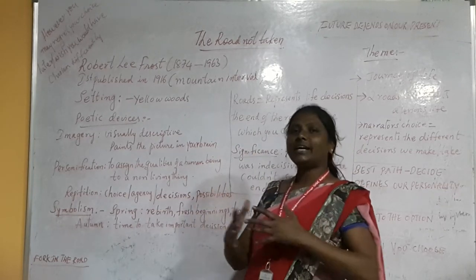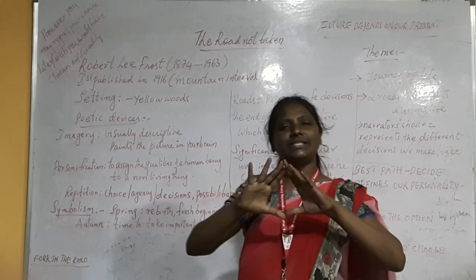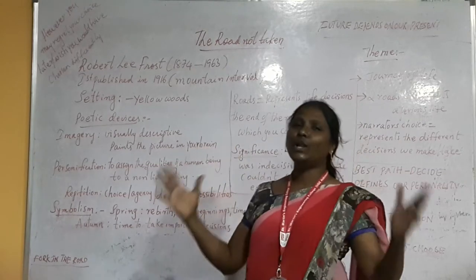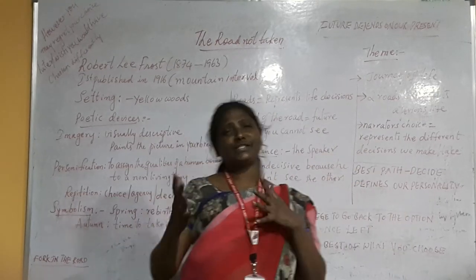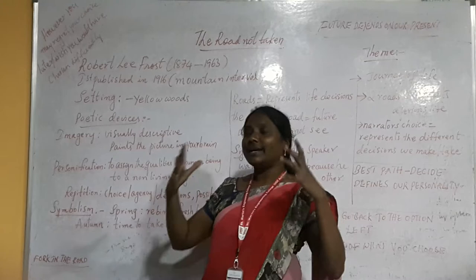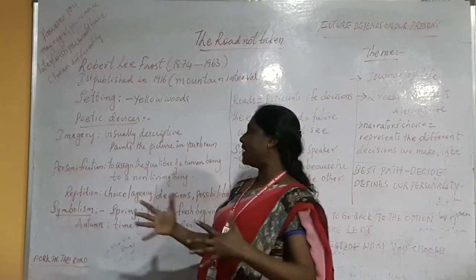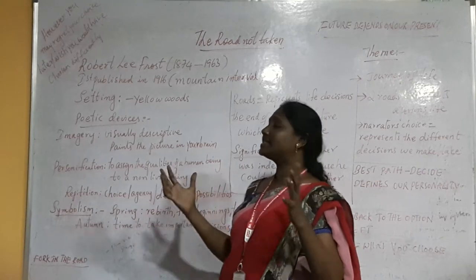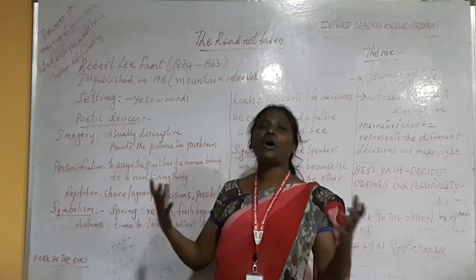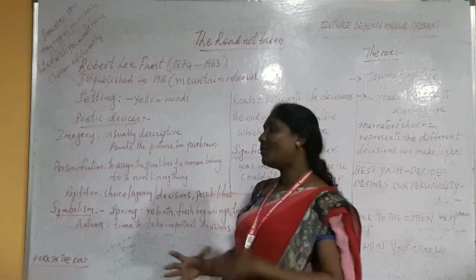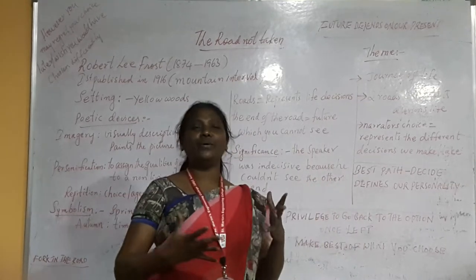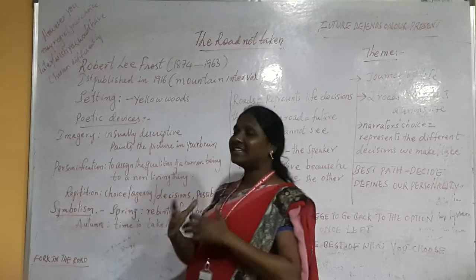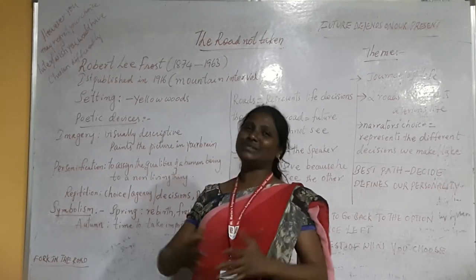Now when we take the poem, we should see where the setting is. The poem is set in the yellow woods. The poet has used different poetic devices in this poem. The setting — yellow woods — is a symbolic element. Before we go into the poem, I would like to talk about the poetic devices used by the poet.